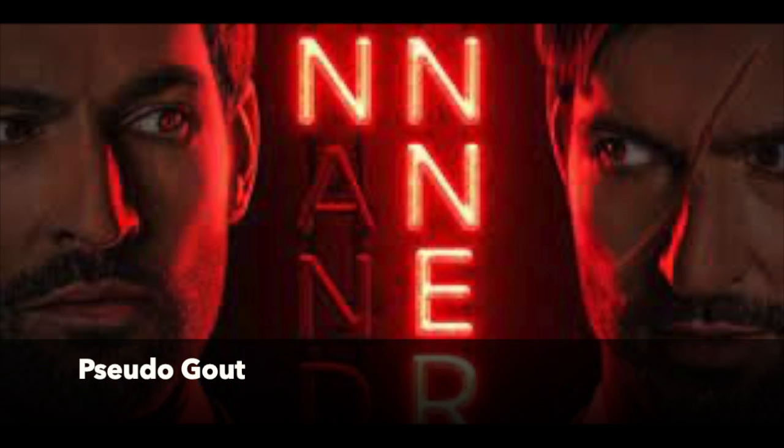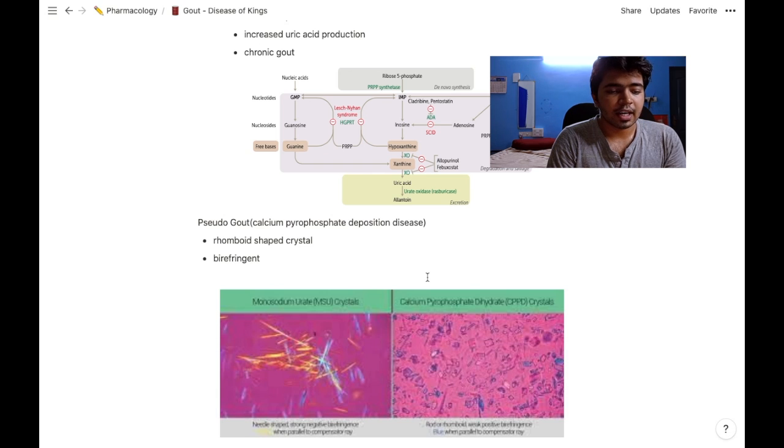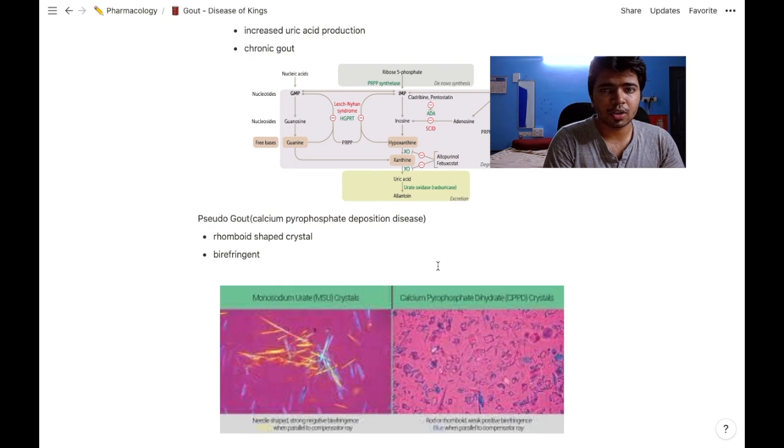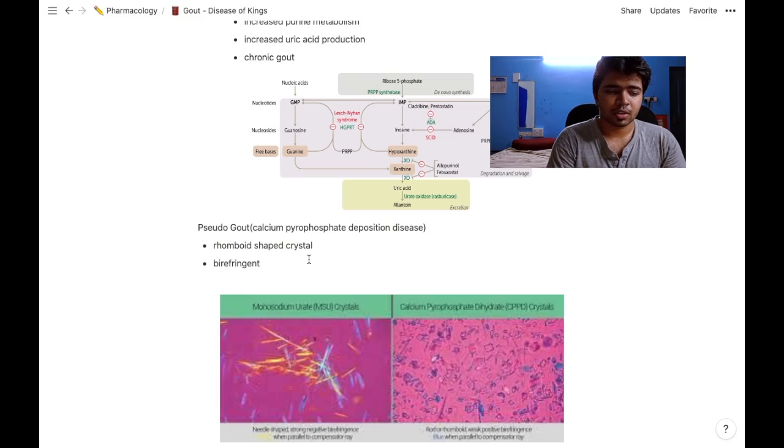Pseudogout is otherwise known as calcium pyrophosphate deposition disease. As the name denotes, calcium pyrophosphate gets deposited in the synovial fluid. The treatment is the same as acute gout. The samples under polarized light are observed to be rhomboid-shaped, whereas in gout they are needle-shaped.